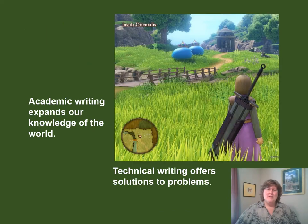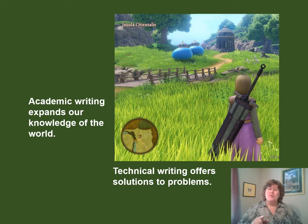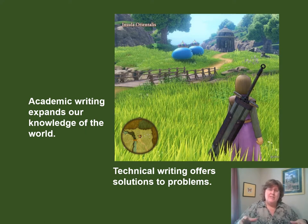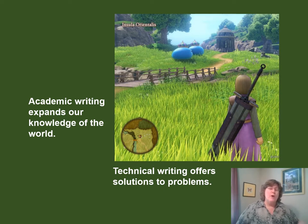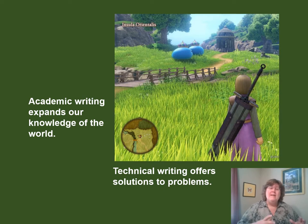The second difference between academic writing and technical writing is that academic writing expands our knowledge of the world. Much like the map in the lower left corner of this picture — a screenshot of a game — that map provides additional information and broadens the perspective of the world that the game is operating in. However, technical writing offers solutions to problems. The problem a character may be facing is beating an unbeatable monster just over the hill, and the technical writer will provide step-by-step instructions on how to accomplish that goal.